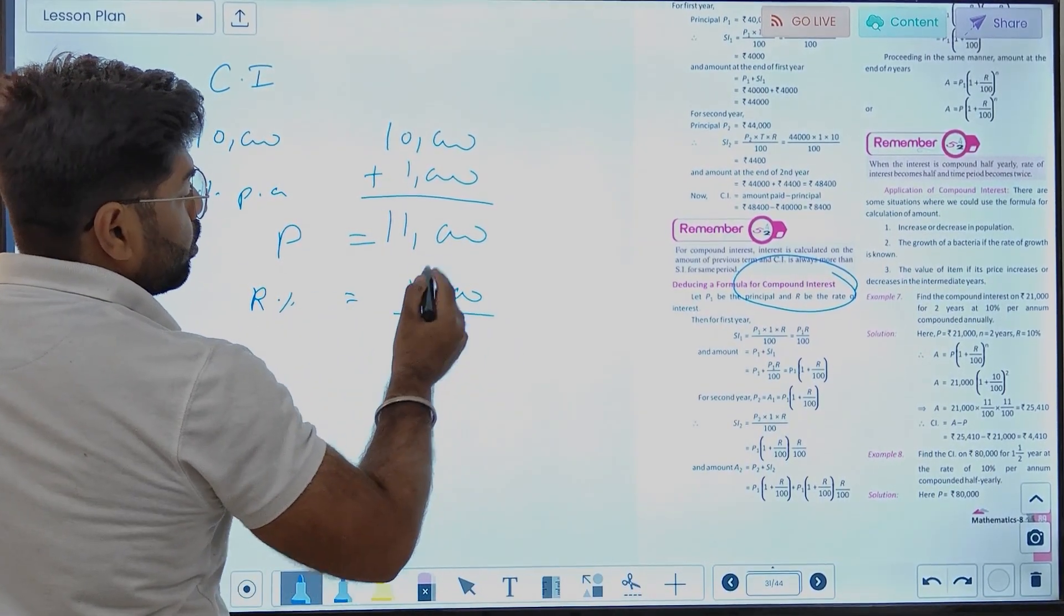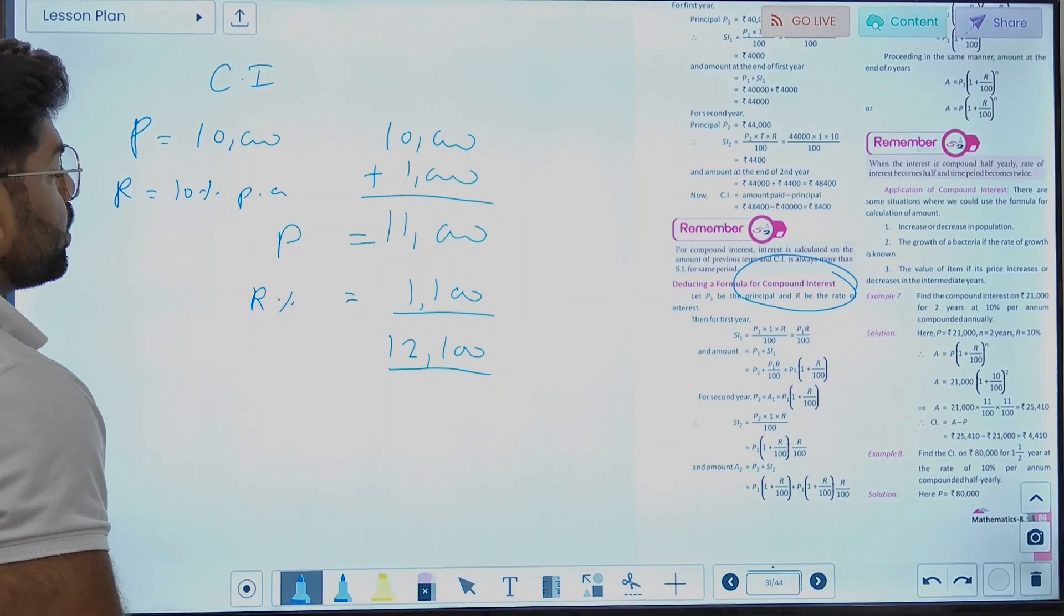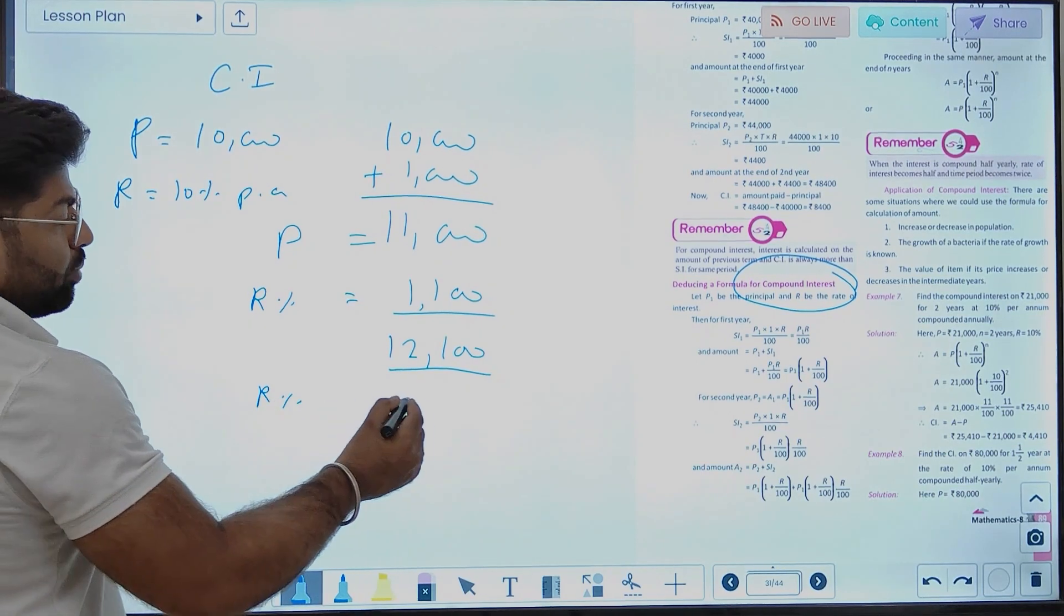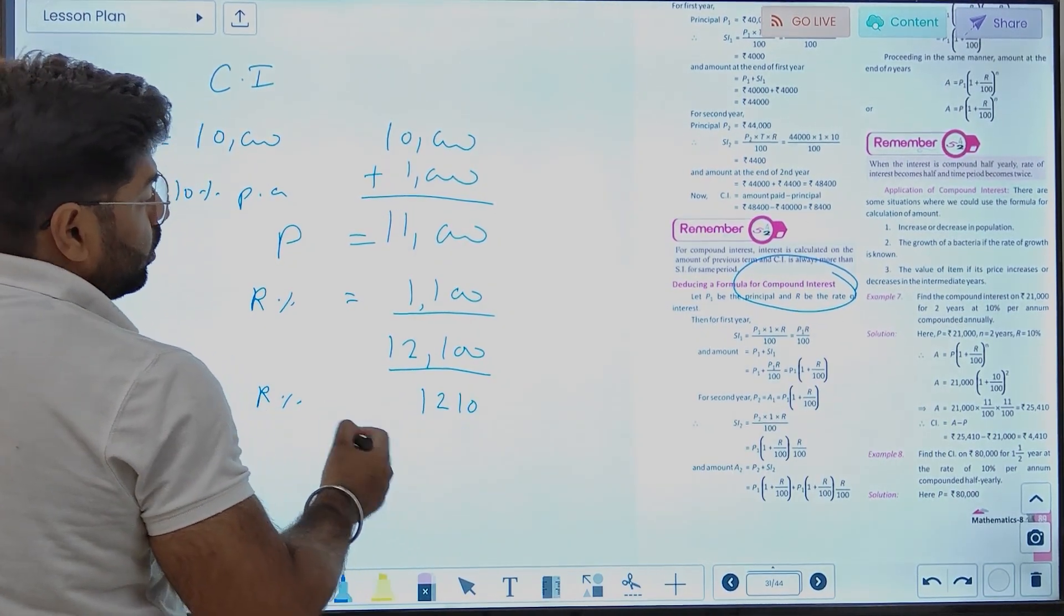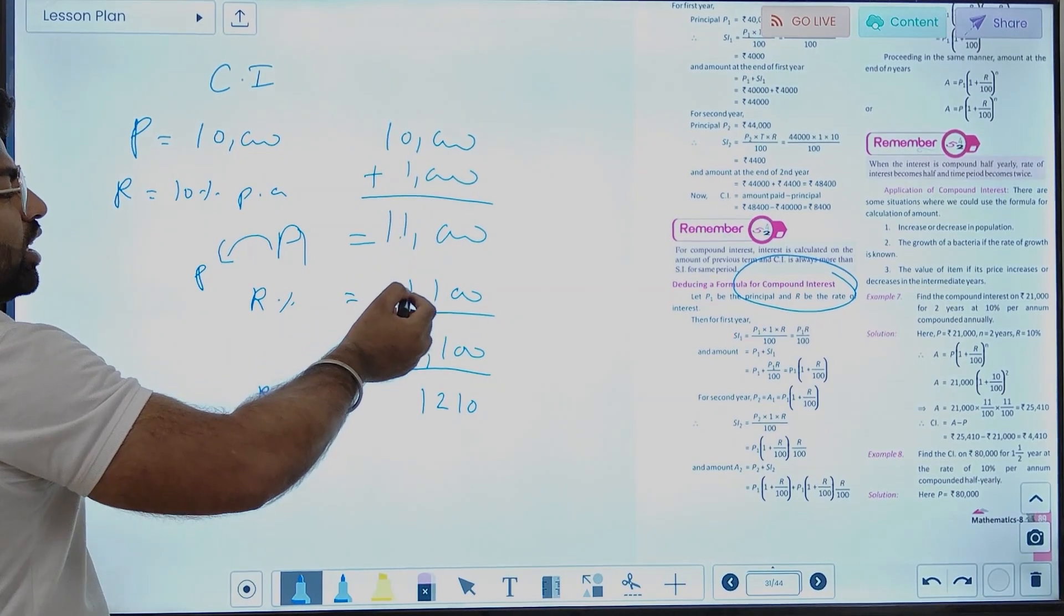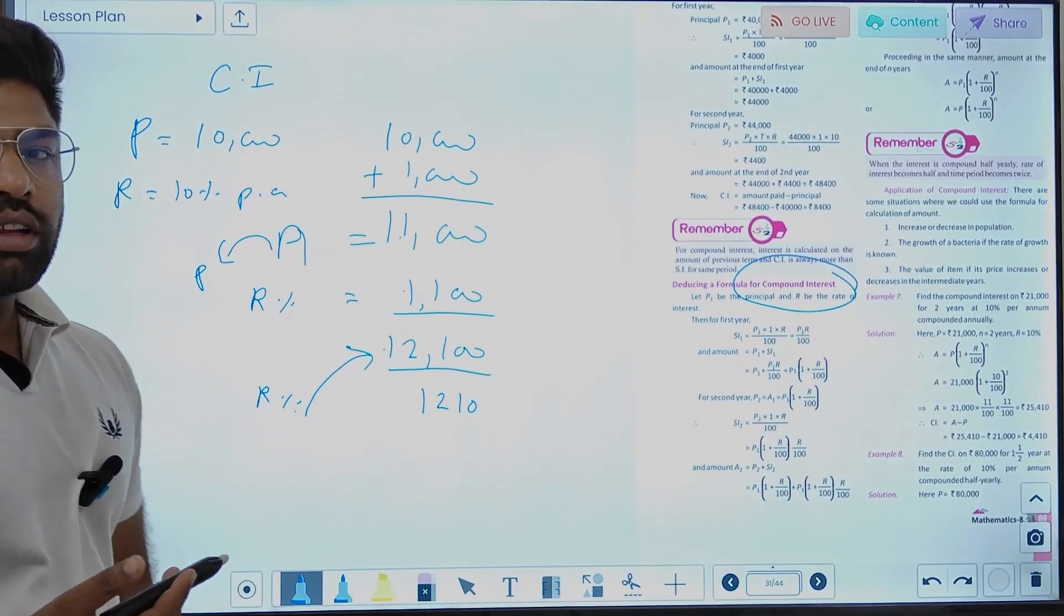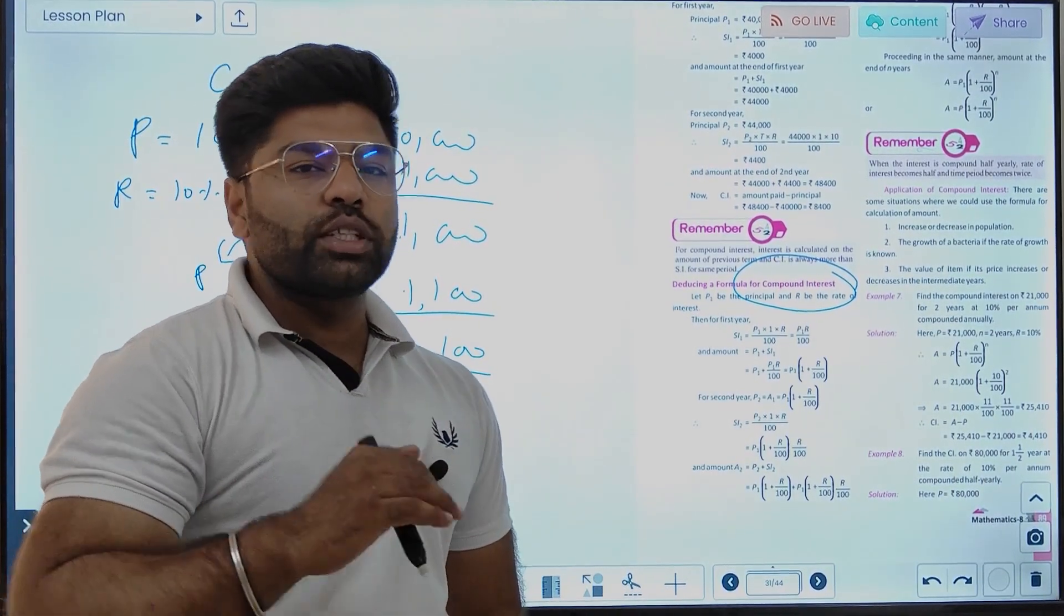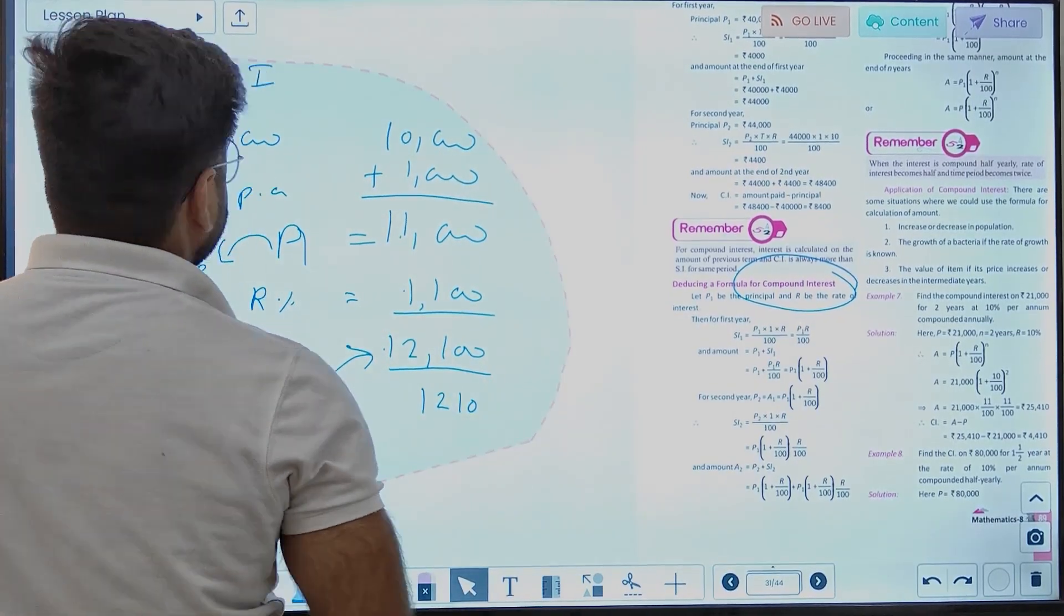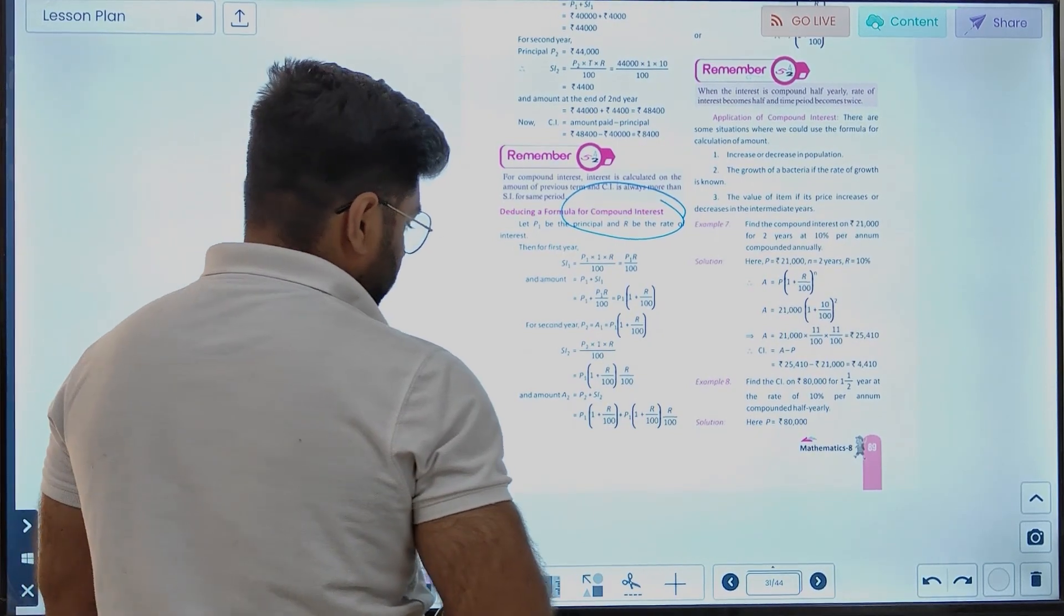Then we will have 10 percent of 11,000, plus that amount. So we will get 12,100. Then we can do this type of interest. If we have interest on the interest, with the rate of 10%, we will get compound interest. That amount we will have to calculate.